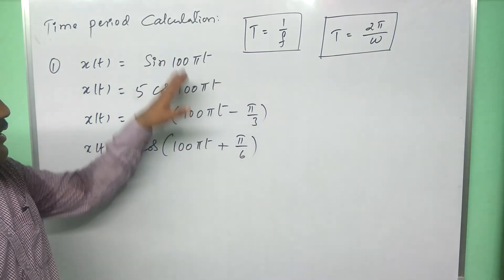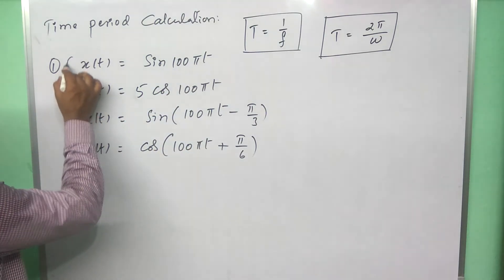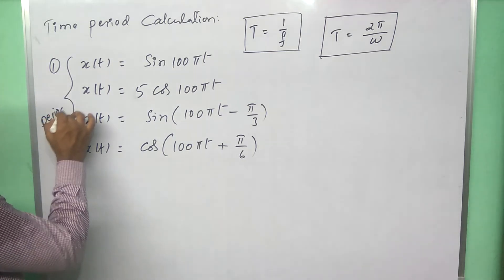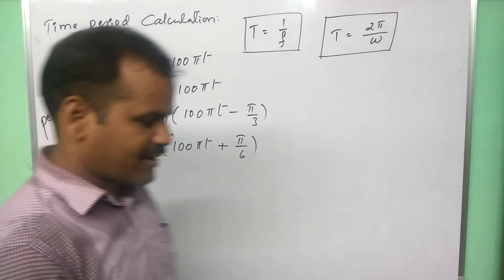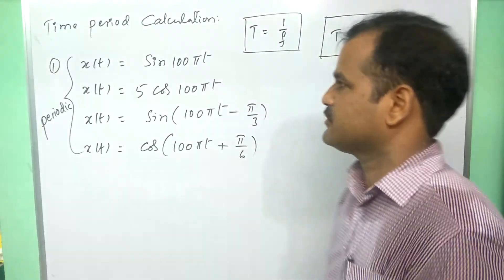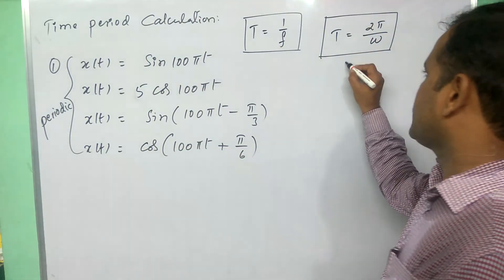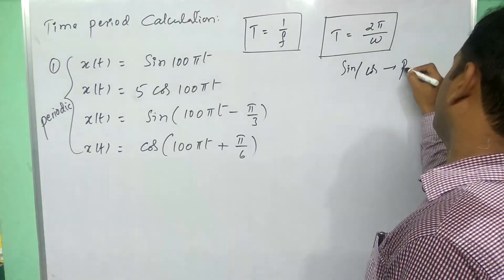See, all are periodic signals. Because all are sinusoidal signals, those are periodic signals. Already, in our previous video, we have confirmed that sine and cos signals are periodic.